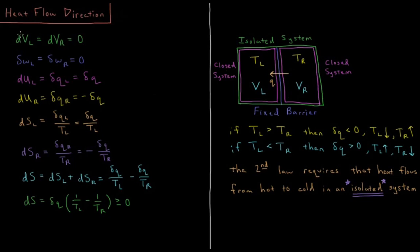The volume change of each system is zero since they're fixed, so the work done by or on either of them is also equal to zero. The only way that energy can change is by heat. So dU for the left side equals dQ_L, the heat for the left side, where heat flowing into the left side is defined as positive dQ. The change in internal energy of the right side equals dQ_R, which equals negative dQ. So a positive sign for heat means energy is flowing into the left, increasing the temperature of the left side.